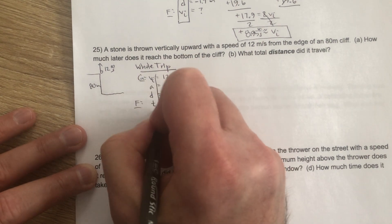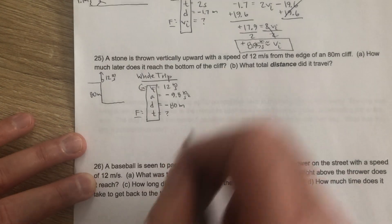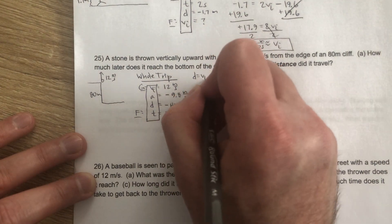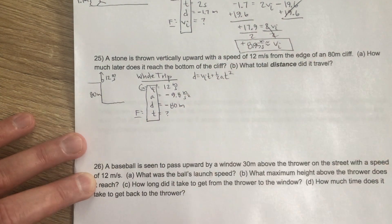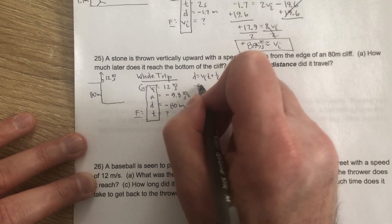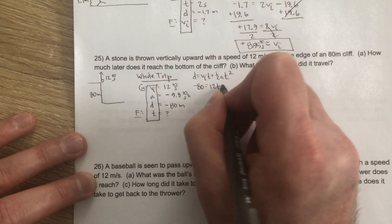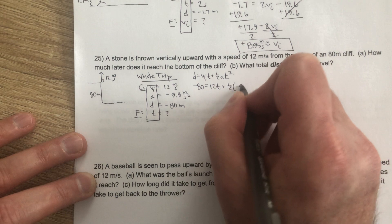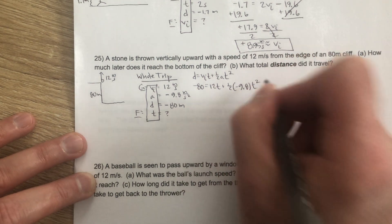So this is going to set up for the quadratic. D equals VIT plus 1 half AT squared. So negative 80 equals 12T plus 1 half times negative 9.8 T squared.